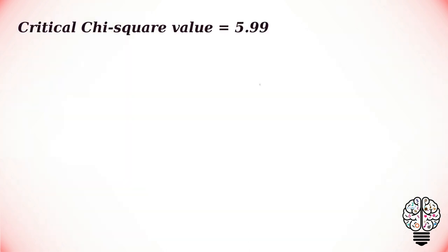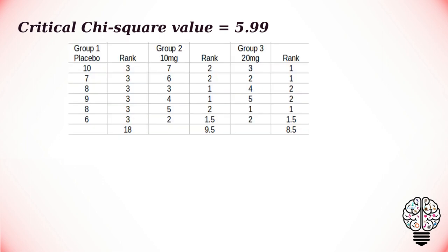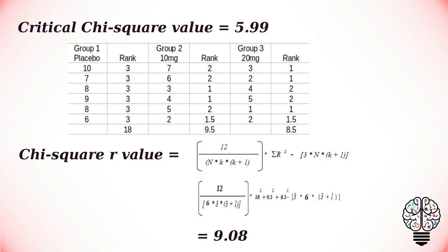If the chi-squared r value is greater than 5.99 then we can reject the null hypothesis. We usually rank our data on the whole, but this time we have to rank our data across the row for the individual, as this is paired data. If we have the same rank value for two data points, we take the mean of the ranks and mark their values accordingly. If we substitute those values in our test statistic, we will get our test statistic as 9.08.